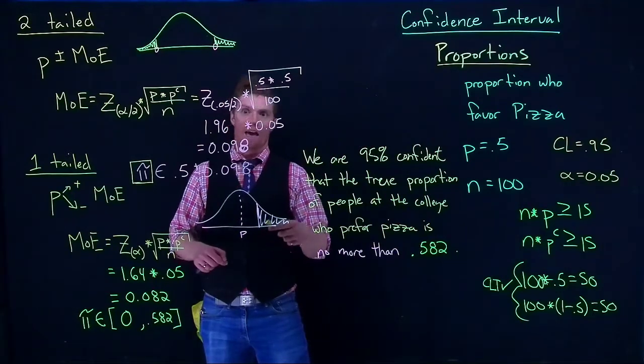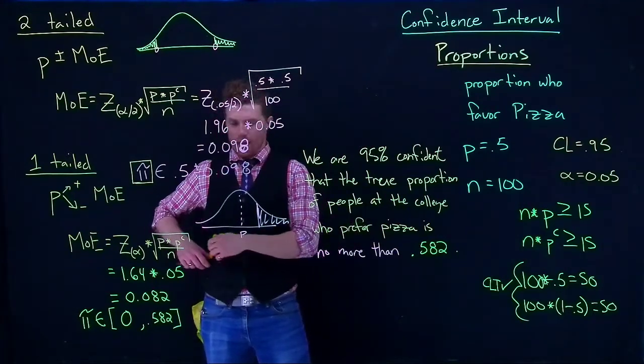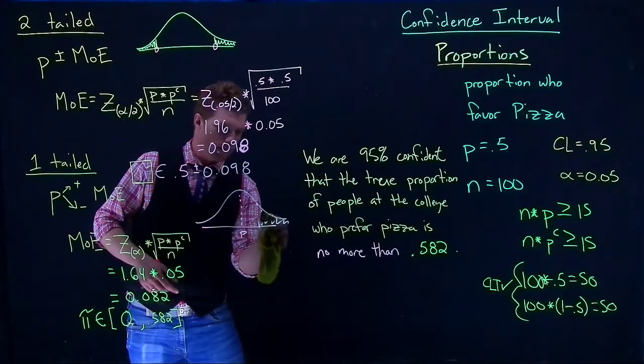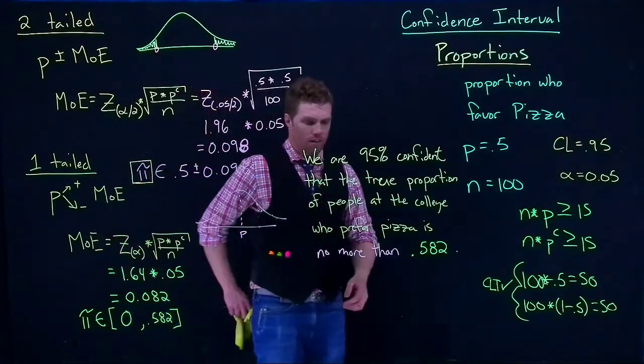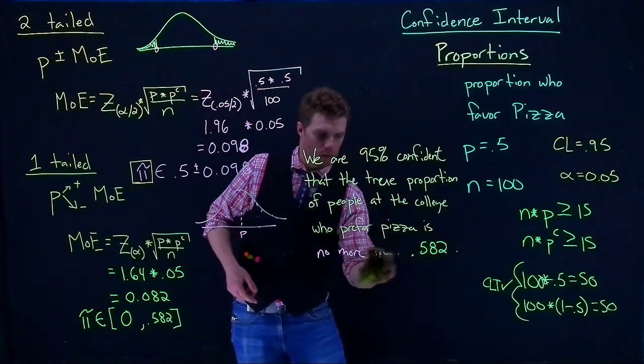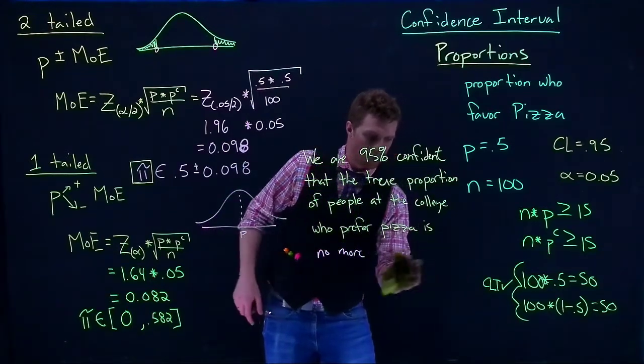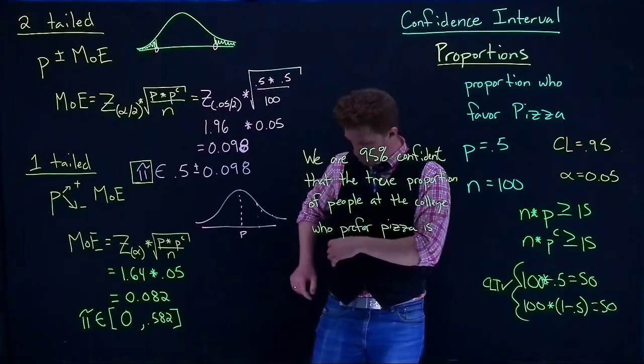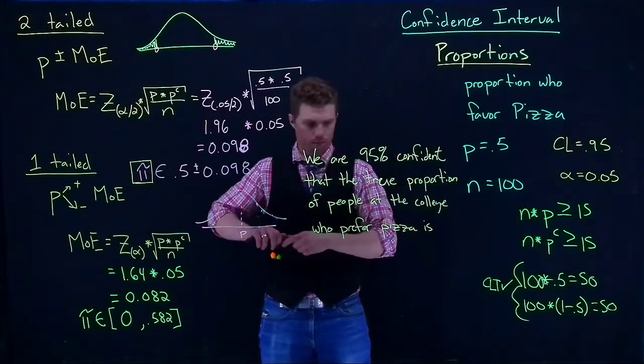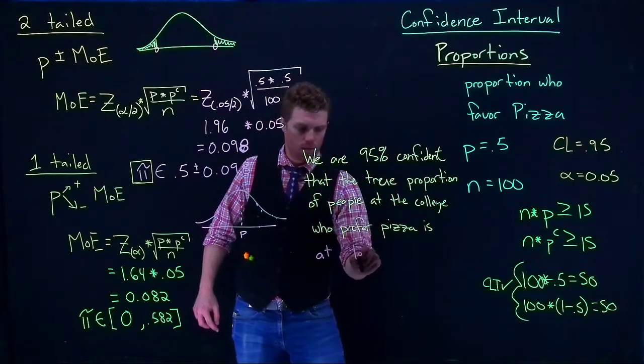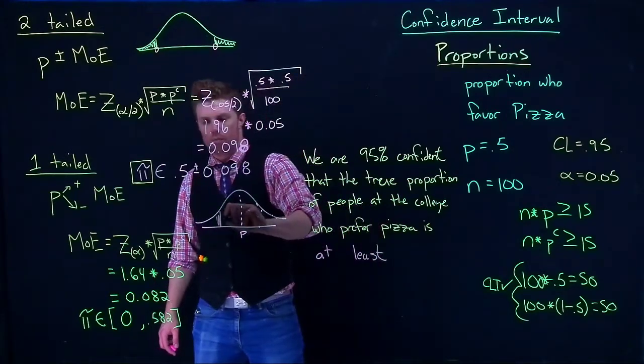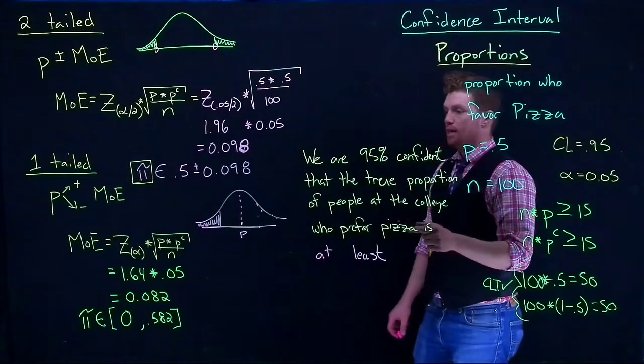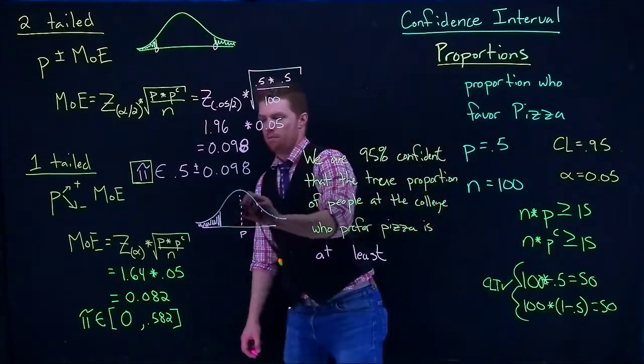Now what happens if I wanted to say at least? If I wanted to say at least, here we're throwing our error onto this bottom side. So I'm 95% confident that the true proportion of people at the college who prefer pizza is at least some number here.